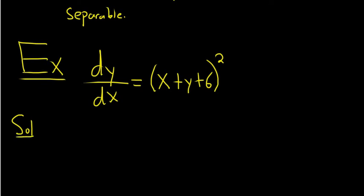So the first thing we do is identify u. So in this case, u is just this piece right here. So we're going to let u be equal to x plus y plus 6. That's the first step.